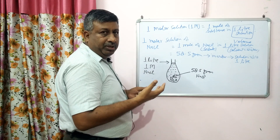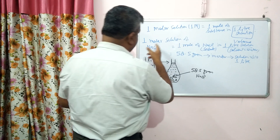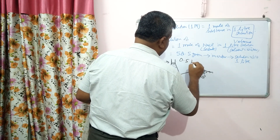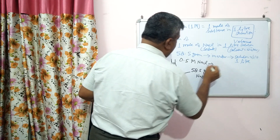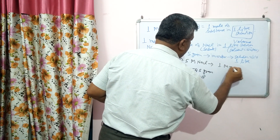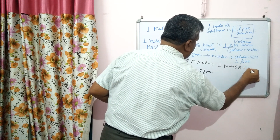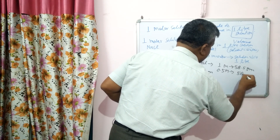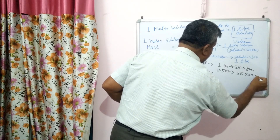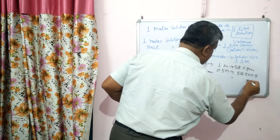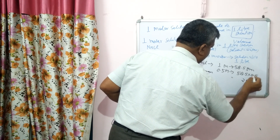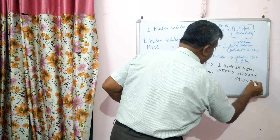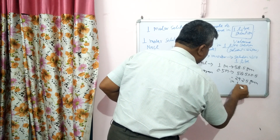Similarly, if it is a 0.5 molar NaCl solution: we know that for 1 mole, 58.5 grams of NaCl is required. So for 0.5 molar solution, it is a very simple calculation — 58.5 multiplied by 0.5 equals 29.25 grams dissolved in 1 liter solution.